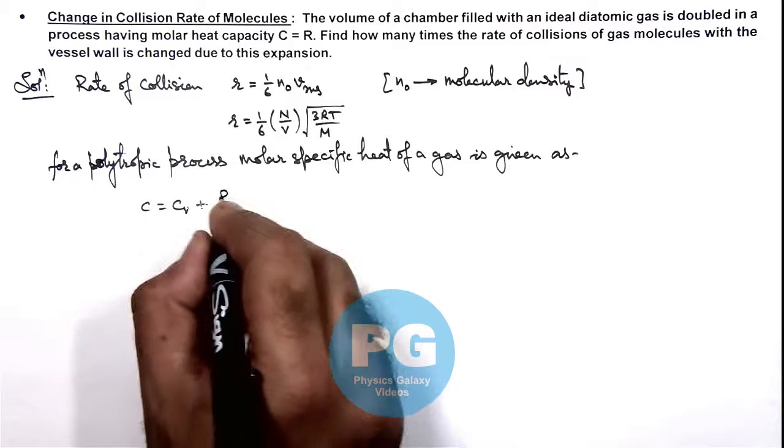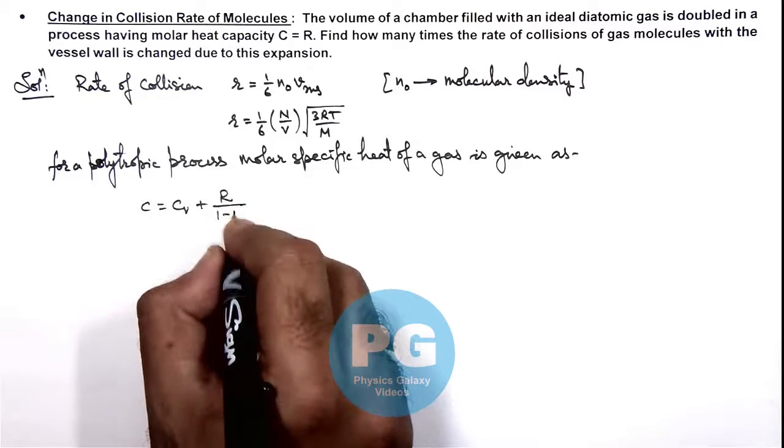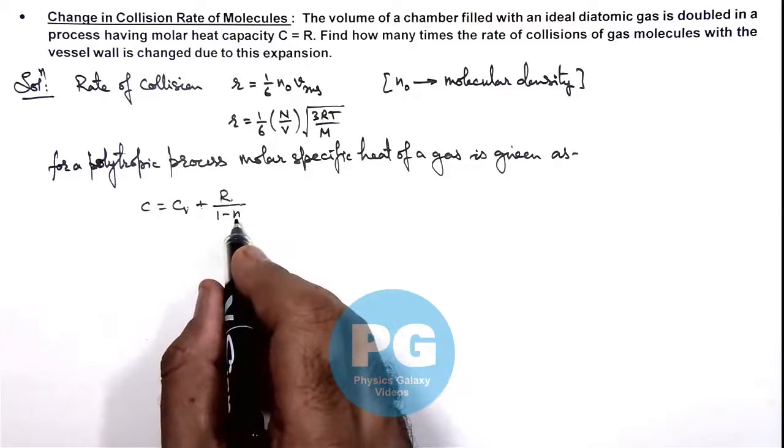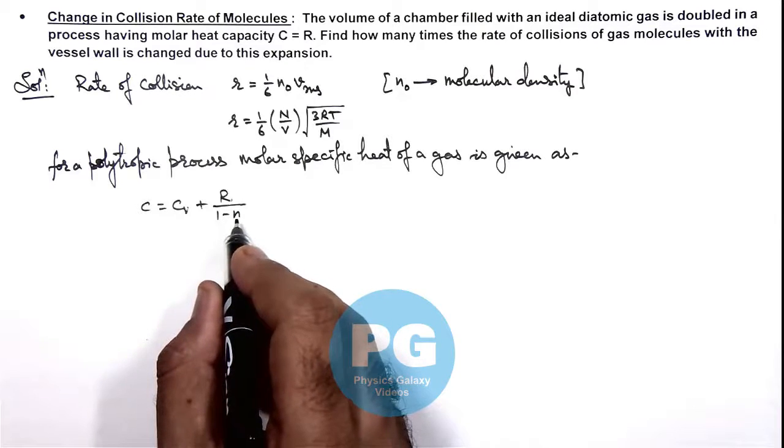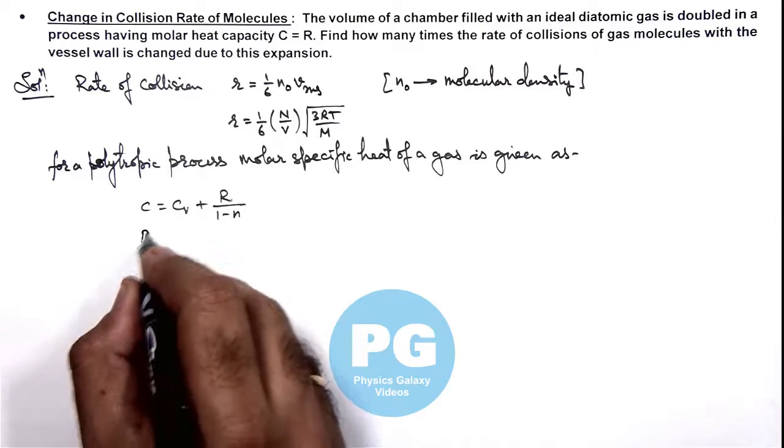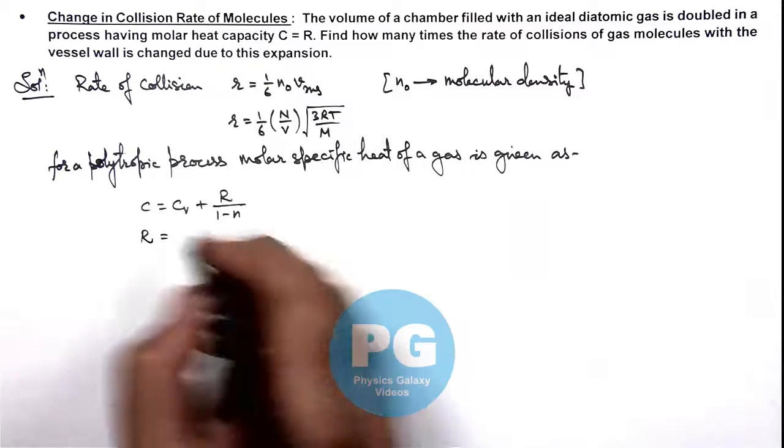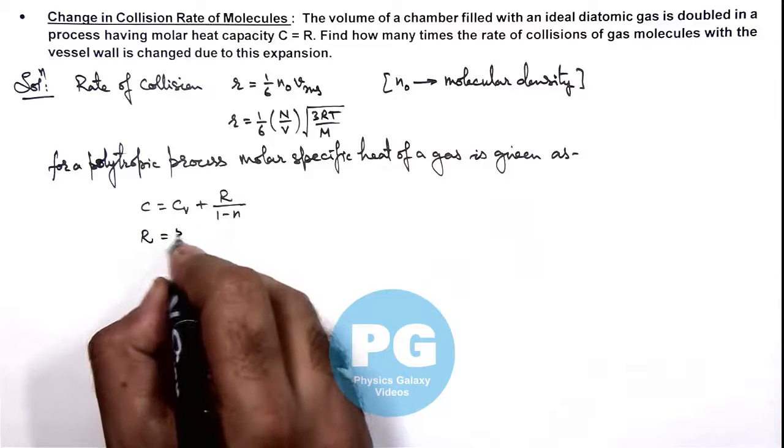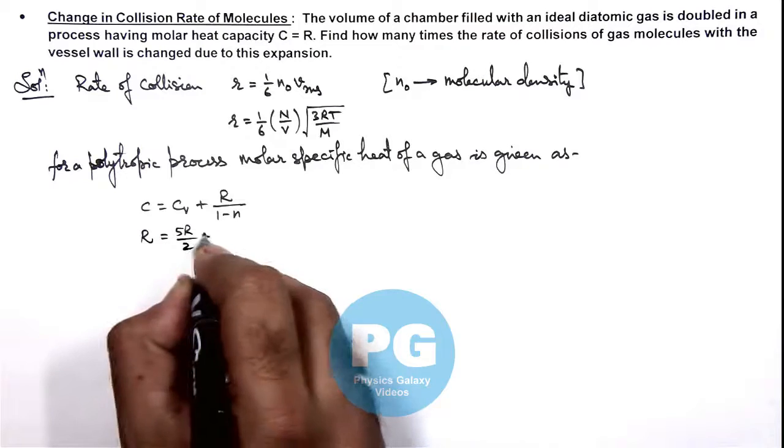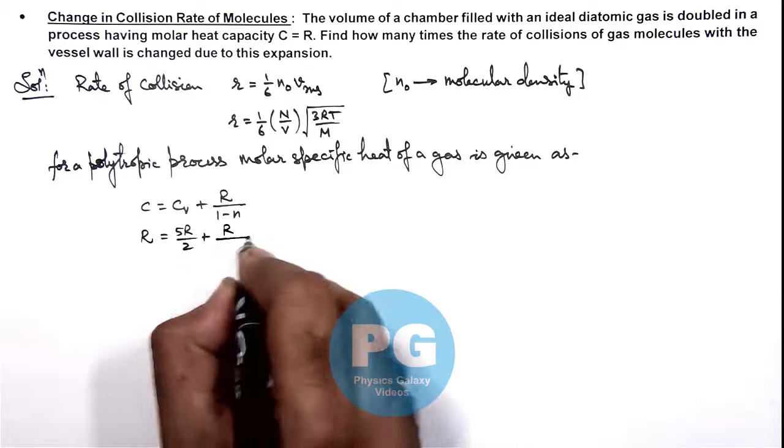plus r upon 1 minus n, where n is the polytropic constant. And the value of C we are already given as r, and for a diatomic gas Cv we can write as 5 r by 2, plus r by 1 minus n.